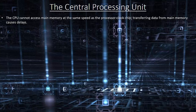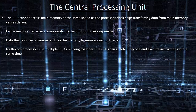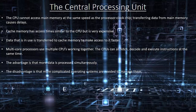The CPU cannot access main memory at the same speed as the processor clock chip; transferring data from main memory causes delays. Cache memory has access times similar to the CPU but is very expensive. Data that is in use is transferred to cache memory to make access to it faster. Multi-core processors use multiple CPUs working together. The CPUs can all fetch, decode and execute instructions at the same time. The advantage is that more data is processed simultaneously. The disadvantage is that more complicated operating systems are needed to manage them.